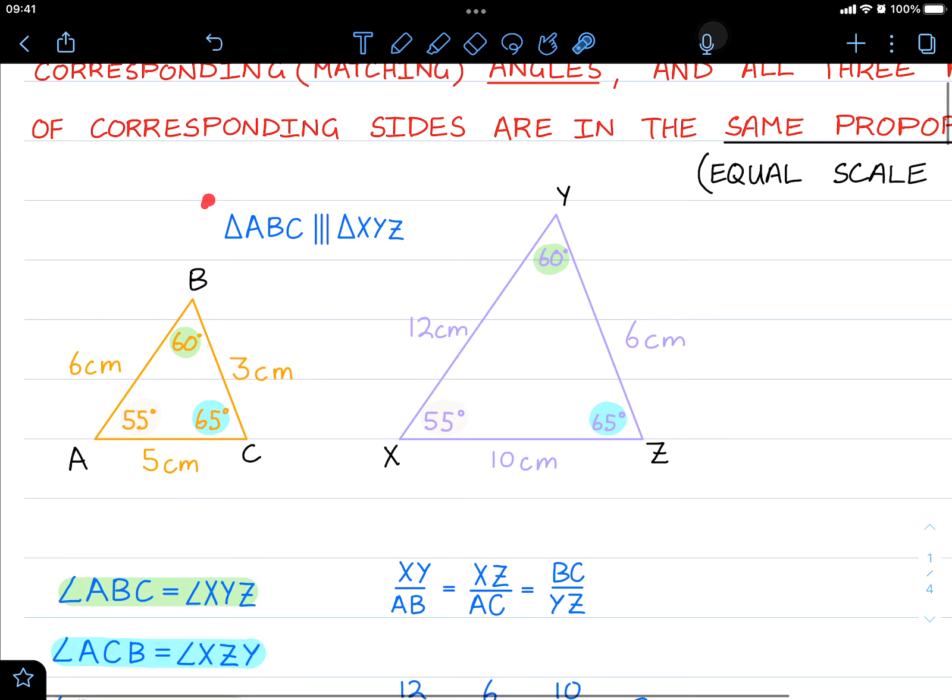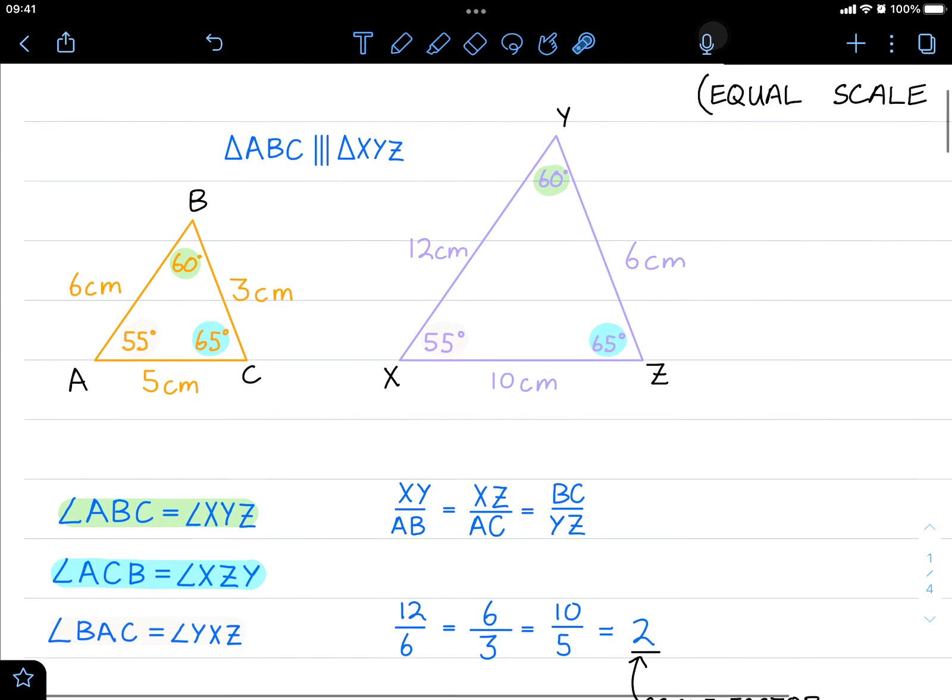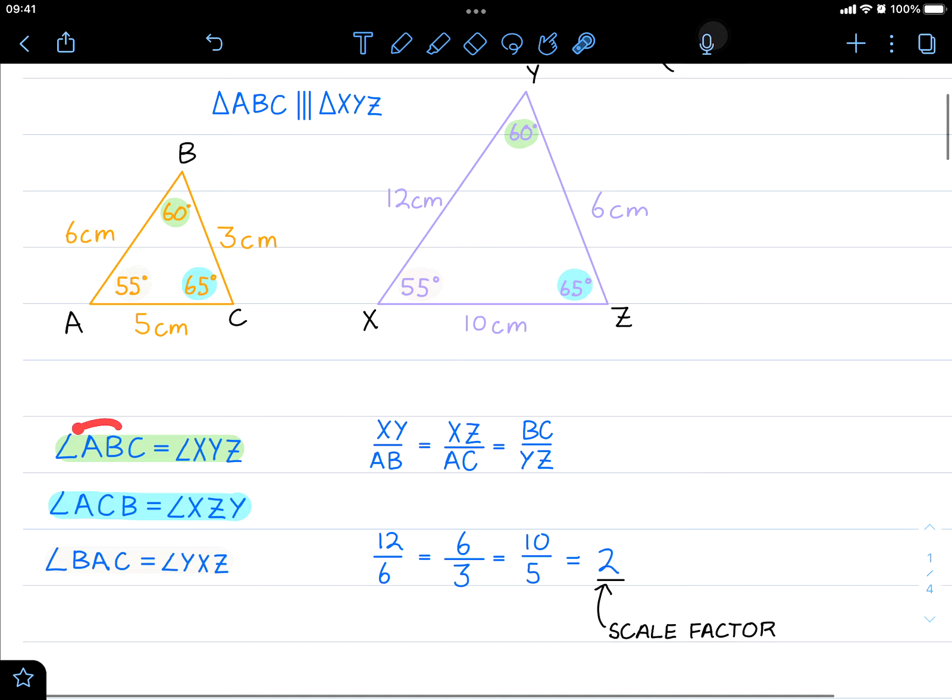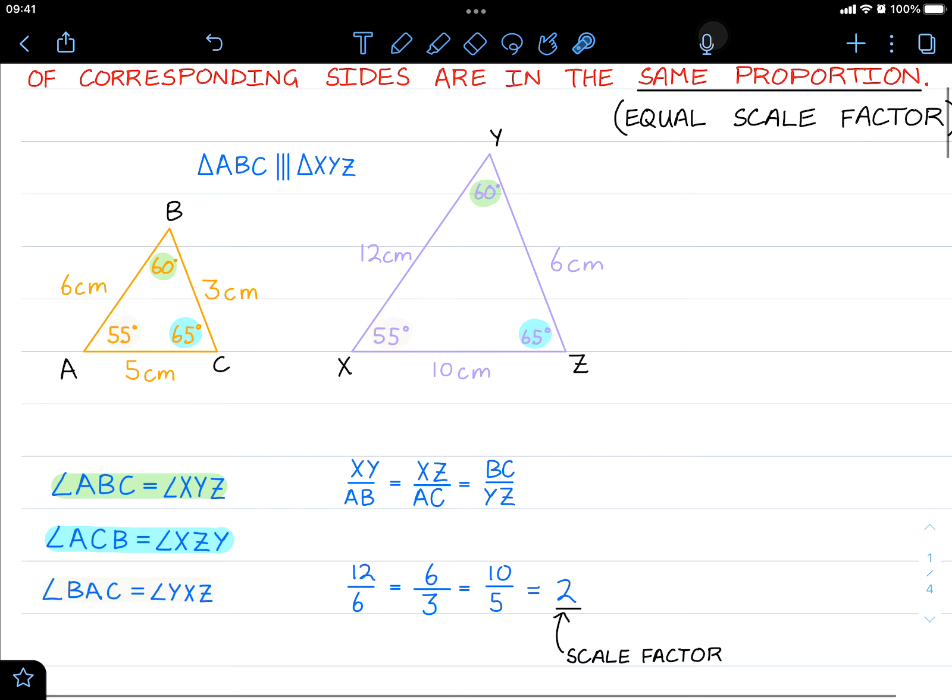So here's an example where we have two triangles that are already given to be similar. From here we can see that angle ABC is equal to angle XYZ, angle ACB is equal to angle XZY, and angle BAC is equal to angle YXZ. So we have three equal angles.